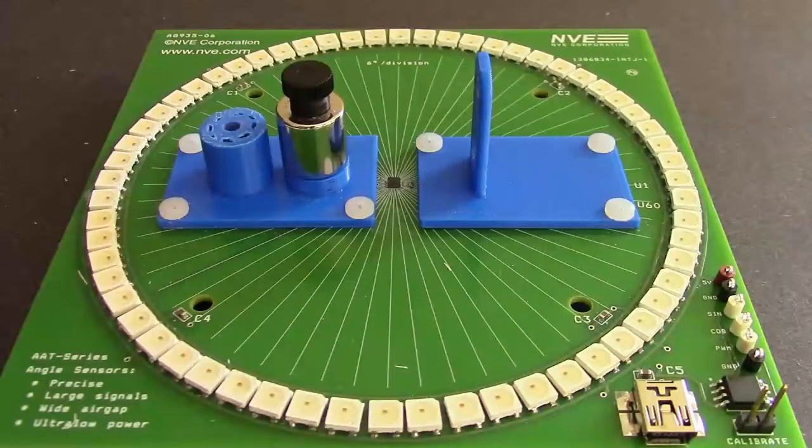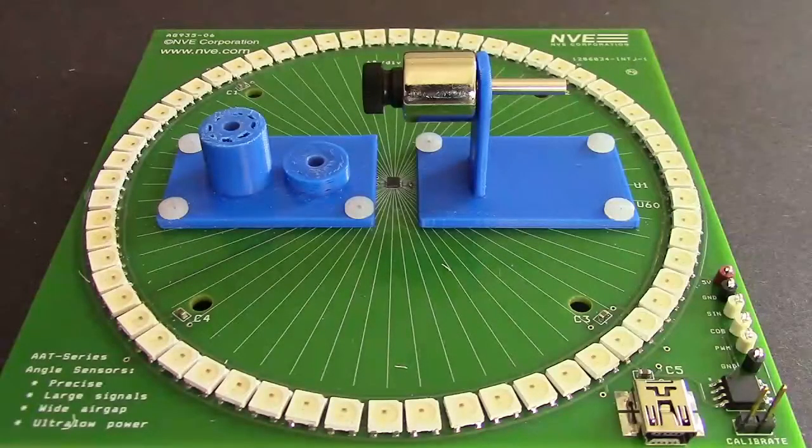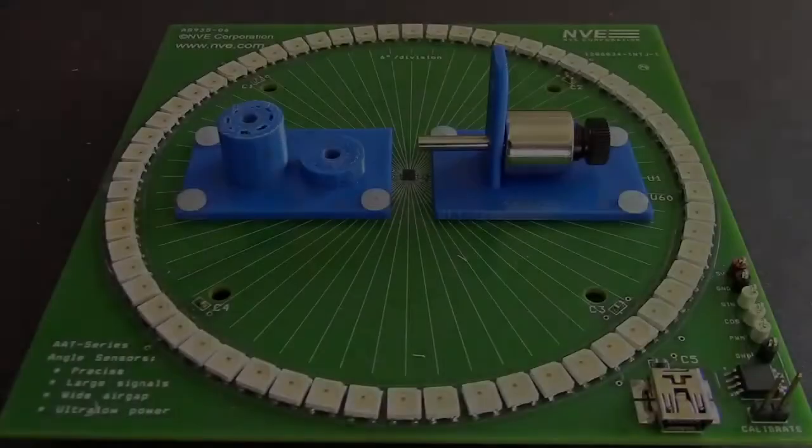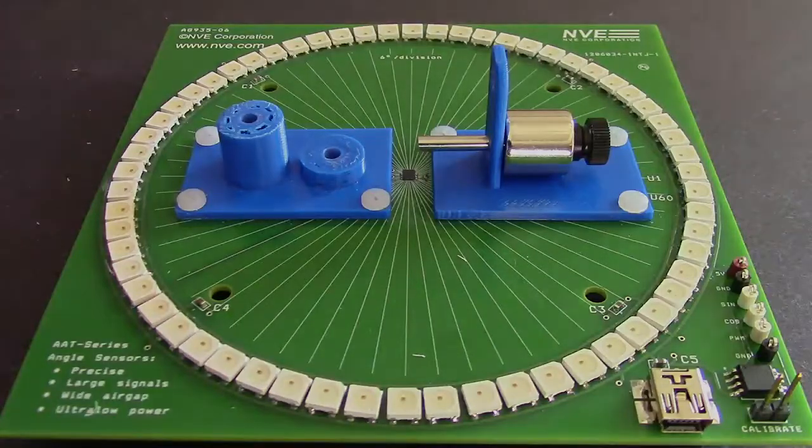Our two most popular configurations are parallel plane off-axis angle sensing and perpendicular plane off-axis angle sensing. We will show two magnet locations for the perpendicular plane configuration to show how different spacing requirements can be met.